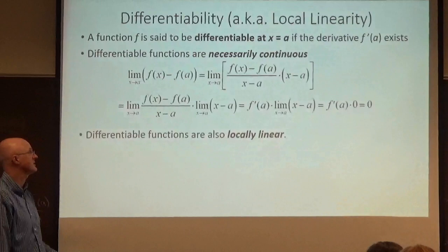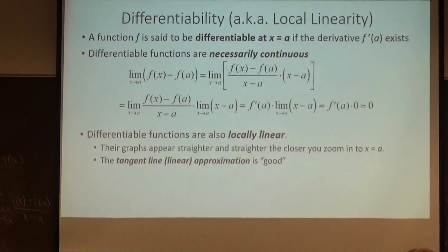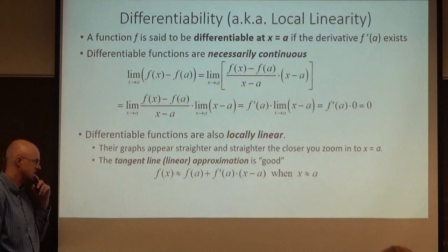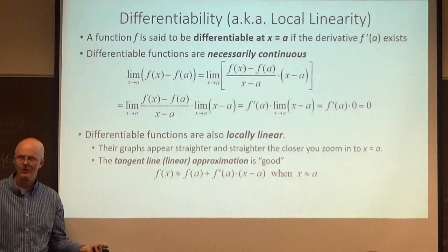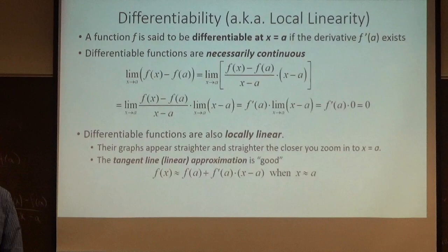Differentiable functions are also locally linear. What does that mean? It means the graphs appear straighter and straighter the closer you zoom in to the given point. It also means the tangent line approximation or linear approximation is good. This approximation is good when x is close to a. Now, the word good is kind of a vague term in math. What does it mean for something to be good in math? We'll talk more about that on Friday.